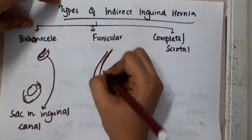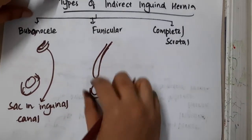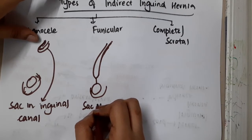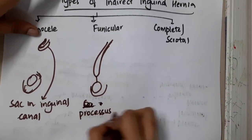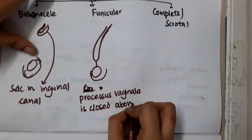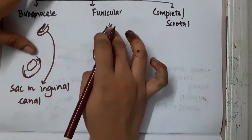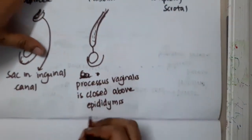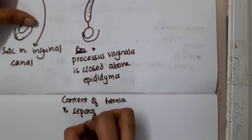In the funicular type, the sac has descended down up to the scrotum but it does not go into the scrotum. The processus vaginalis is closed just above the epididymis. Bowel loops will come through this processus vaginalis, but you can feel them separate — the content of the hernia is separate from the testes. This is called funicular.